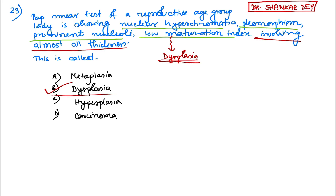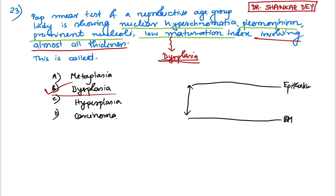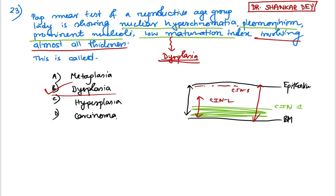In the epithelium: if only one-third is involved, it is called CIN1. If two-thirds is involved, it is called CIN2. If more than two-thirds (near almost all) is involved, it is CIN3. If the full thickness is involved without invasion of the basement membrane (basement membrane intact), it is called carcinoma in situ. These are the dysplastic changes of carcinoma.